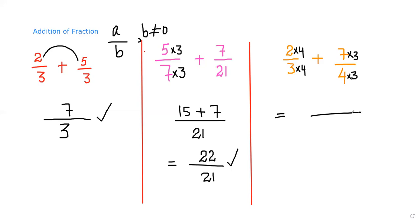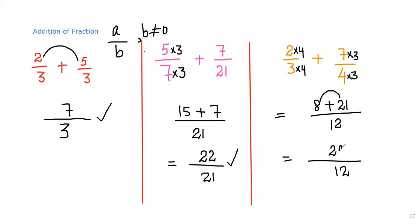Now the denominator of the first fraction is 3 times 4 equals 12, and of the second is 4 times 3 equals 12 — the same number. We write 12 once. The numerator: 2 times 4 is 8, plus 7 times 3 is 21. So 8 plus 21 equals 29. We check: 29 over 12 is already in simplified form, so that is the final answer.